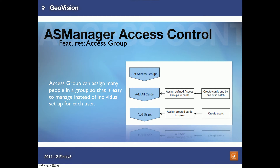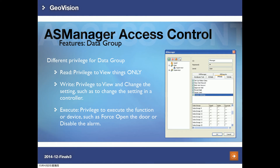The access group function lets you assign many users to an access group for easier management. You set up an access group, add multiple cards or users to it, and each group can have its own access schedule. The data group function is used for different companies within a building — each company has its own data group with its own privileges. The three privilege types are: read (view settings), write (change settings or access control schedules), and execute (open doors or disable alarms within their own data group).